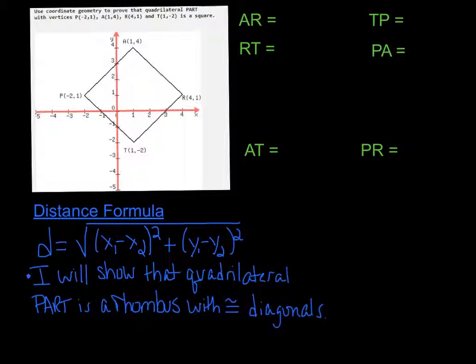What we're going to do today is show that quadrilateral PART is a rhombus with congruent diagonals. Because if you have a rhombus with congruent diagonals, then you also have a rectangle, and a rhombus that's a rectangle will be a square.